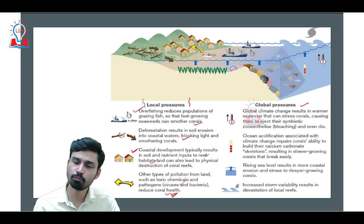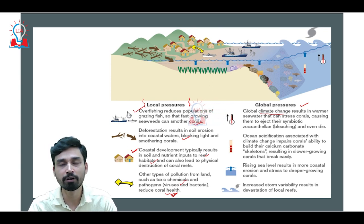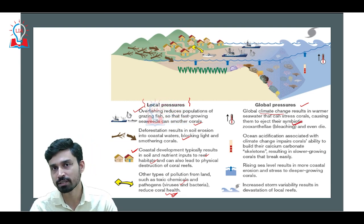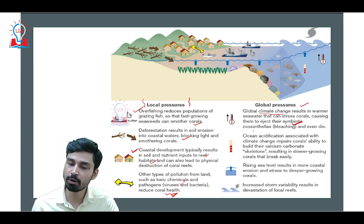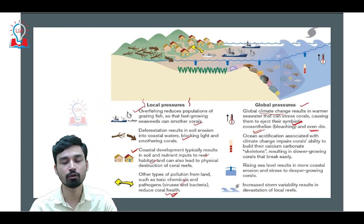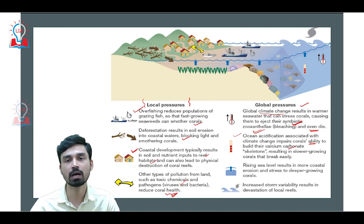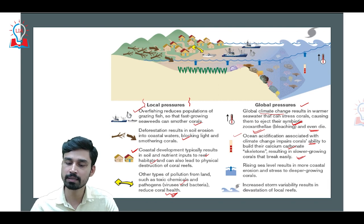At the global scale, climate change — the pattern of global warming we have witnessed over the past century, mainly as a result of industrialization and vehicular emissions — causes corals to become stressed. When corals become stressed due to higher ocean temperatures, they eject their symbiotic zooxanthellae algae, on which they depend for food, and thus finally die due to lack of food. Apart from that, ocean acidification related to climate change also impairs the ability of corals to build their calcium carbonate skeleton, resulting in slower-growing corals that break up easily.